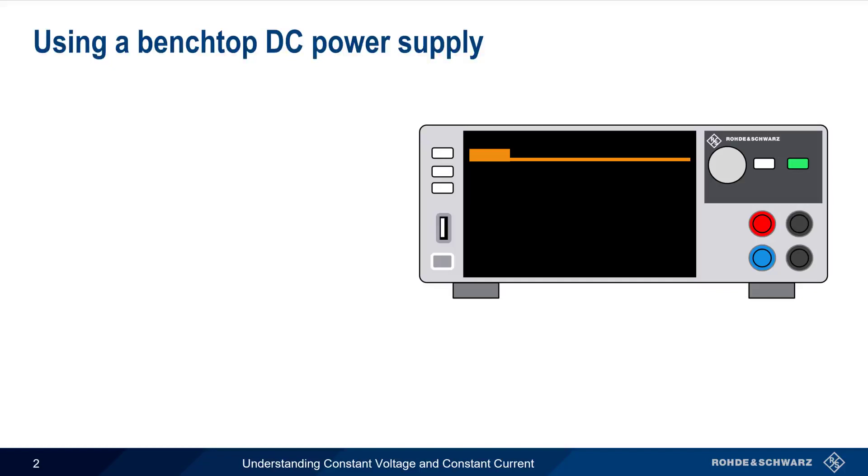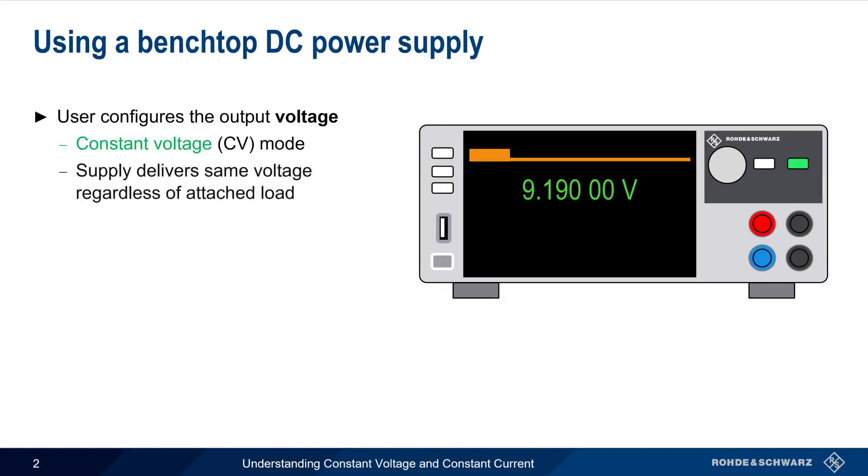The user of a Benchtop DC Power Supply normally starts by configuring the output voltage, and in most cases, the supply operates in so-called Constant Voltage mode, because the supply delivers the same, or a constant voltage, regardless of the attached load.